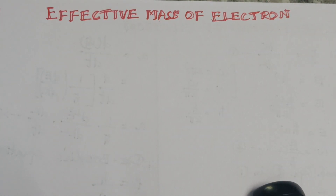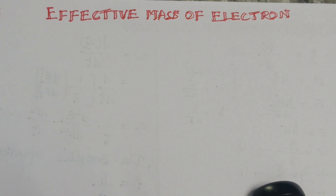Derivation of effective mass of an electron. Let us consider a crystal subjected to an external electric field. The field intensity is E. Due to the applied external electric field, the electron gains velocity, which can be expressed in the wave vector.